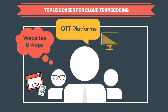OTT platforms: over-the-top platforms are the fastest growing sector moving into cloud transcoding, due to their desire to scale instantly while keeping CAPEX and maintenance costs to a minimum. These platforms are also subject to huge spikes in their transcoding needs, making on-premise solutions difficult to plan efficiently without potentially wasting resources on idle servers. This combination means that cloud platforms can really reduce risk for these companies, allowing them to focus on other objectives that are key to their business, like improving their content.